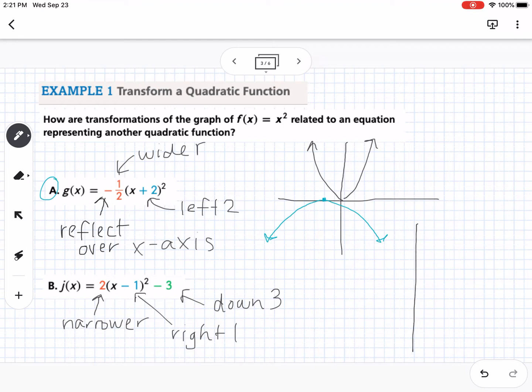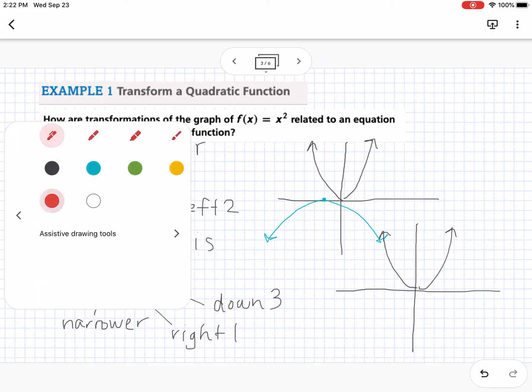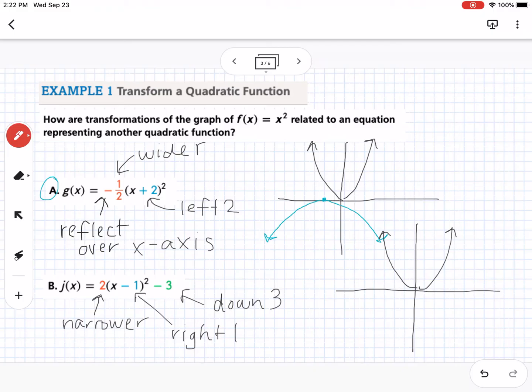So again, we can sketch over here. Here's my parent function. So let's pick a different color, let's make it red. I'm going to go to the right one and down three, and it is going to be narrower. So that's roughly what that would look like.